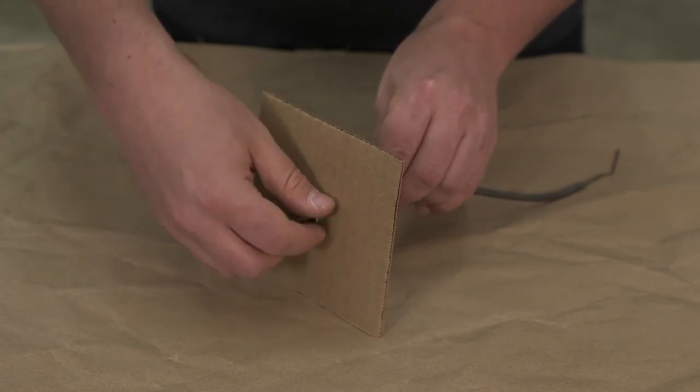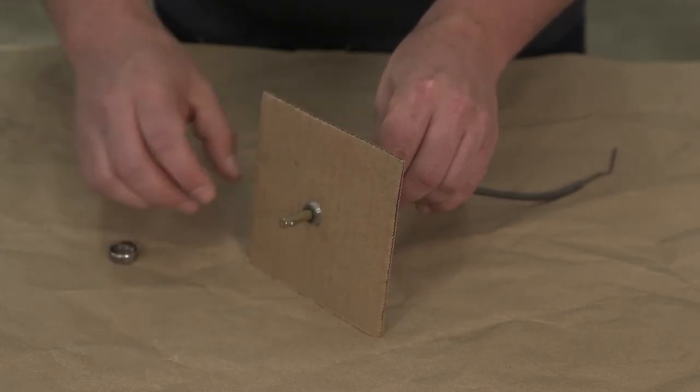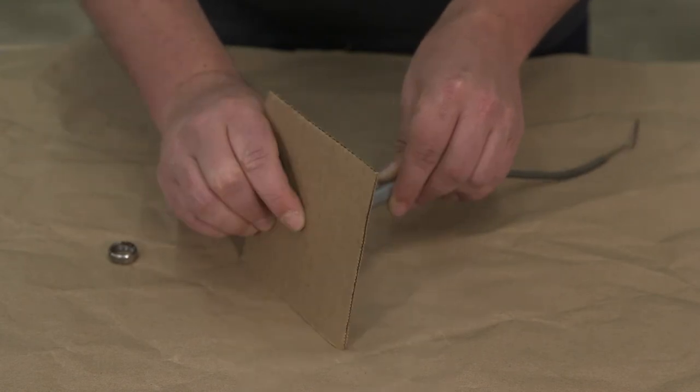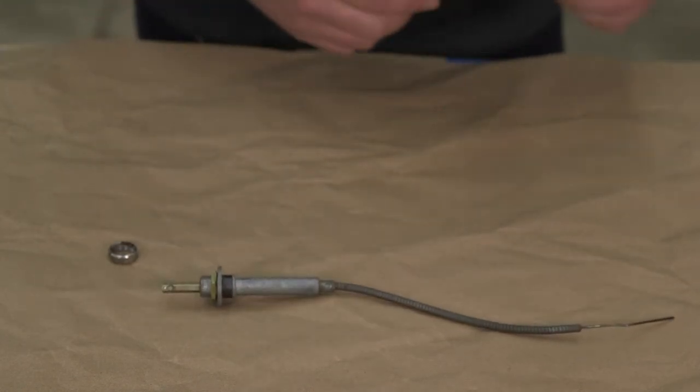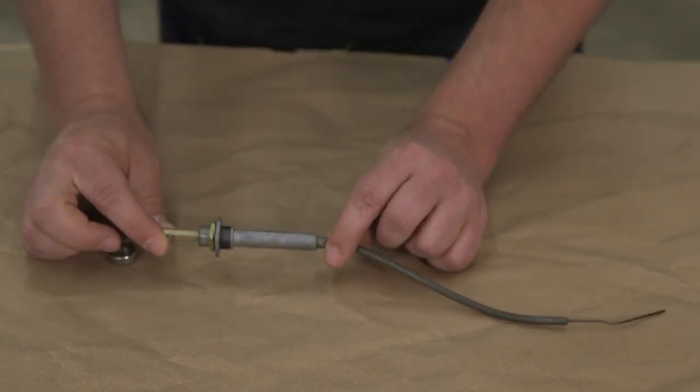Once it's loose finish unscrewing it, remove it from the system, and push the whole cable through the back side of the dash. That's all that's required to do it.